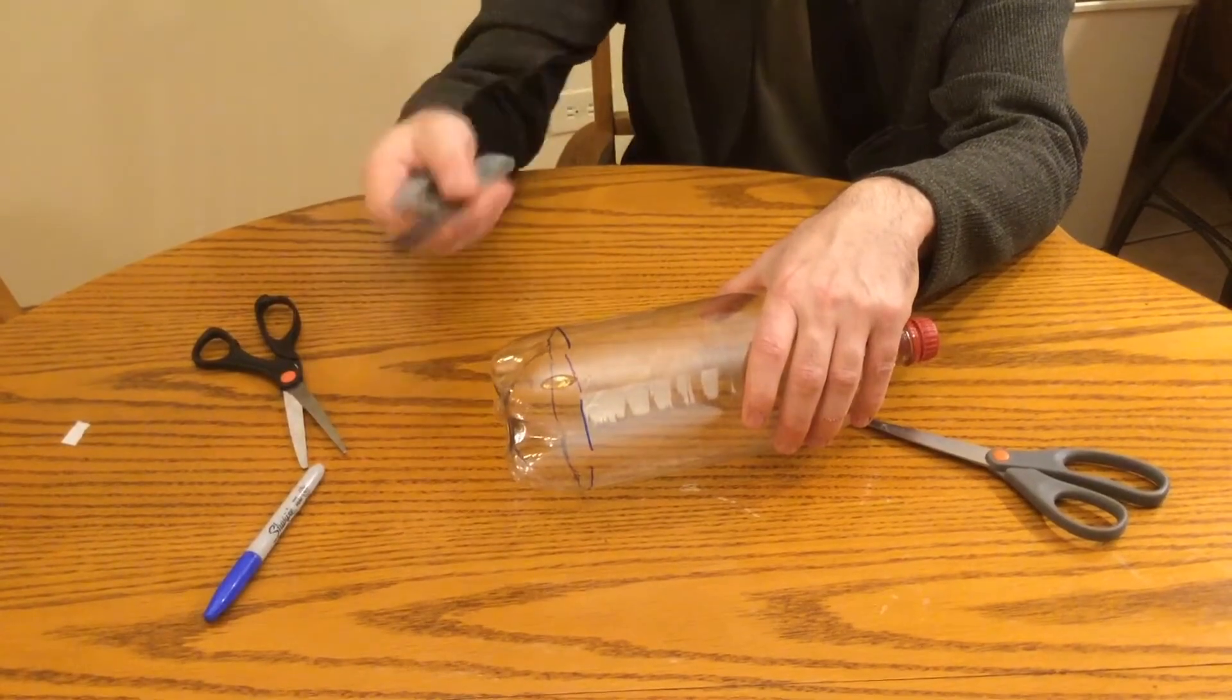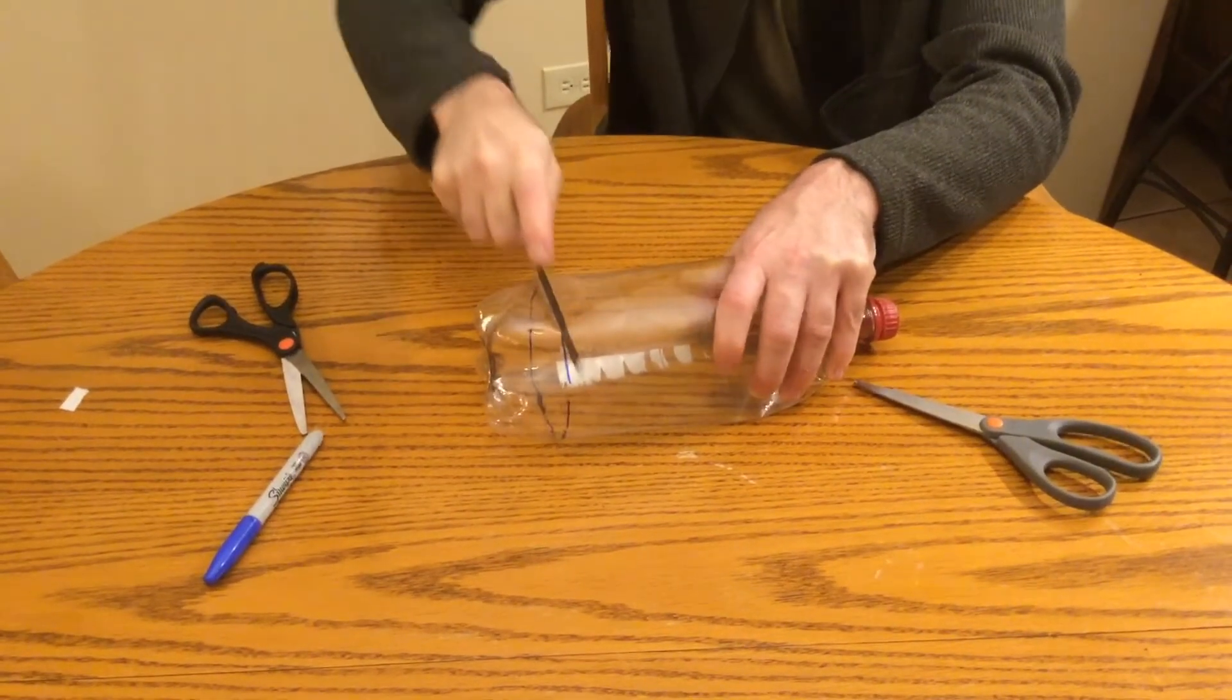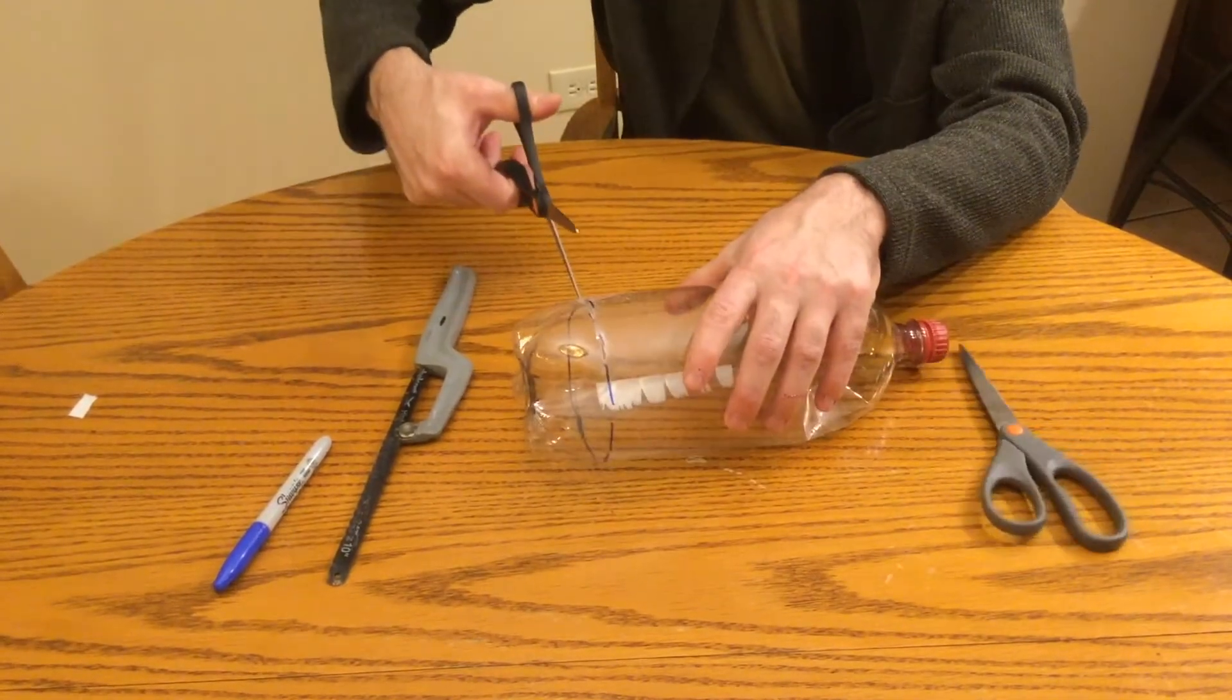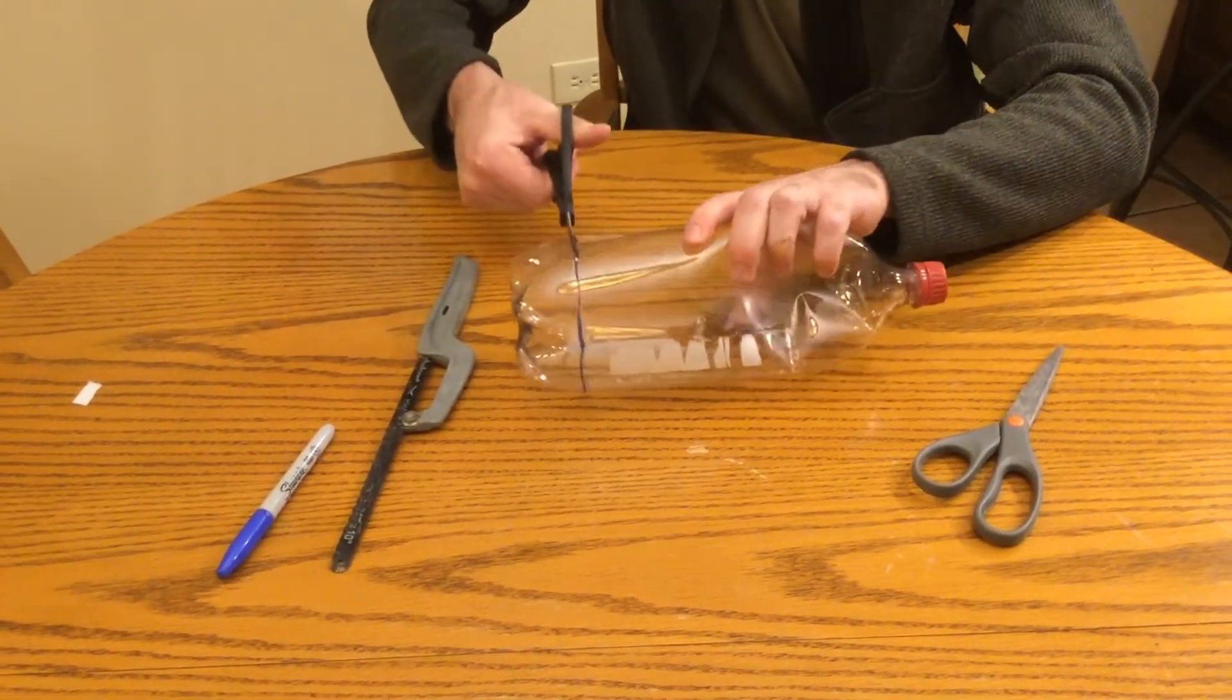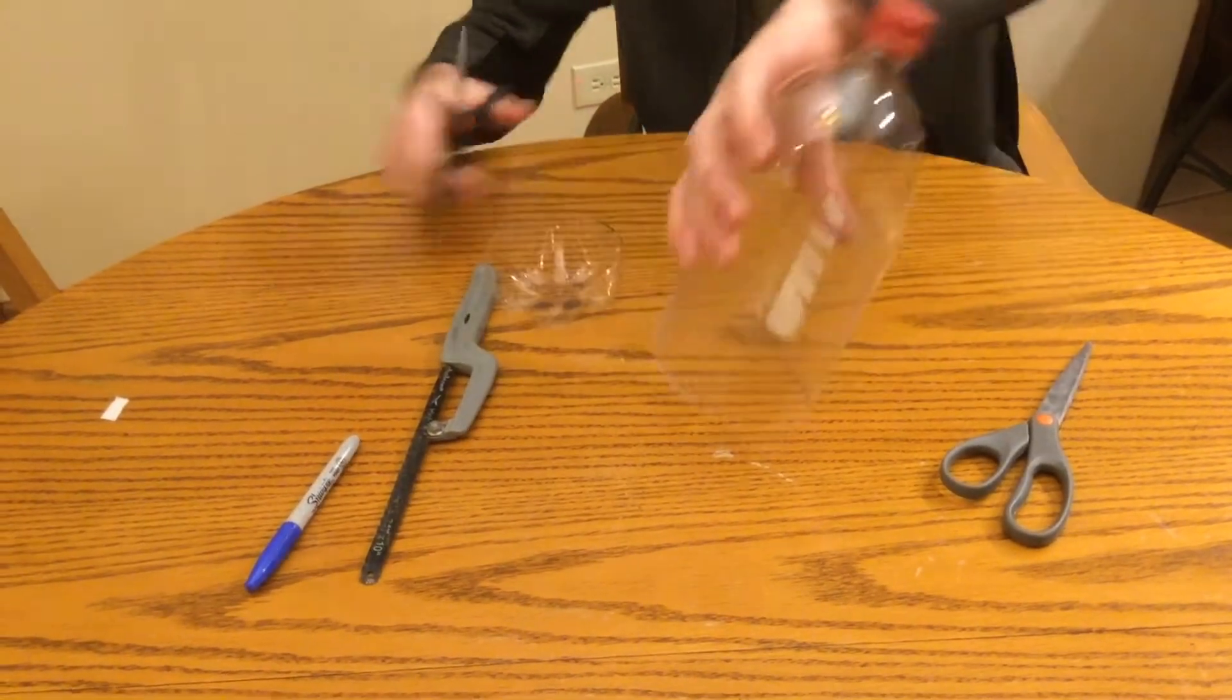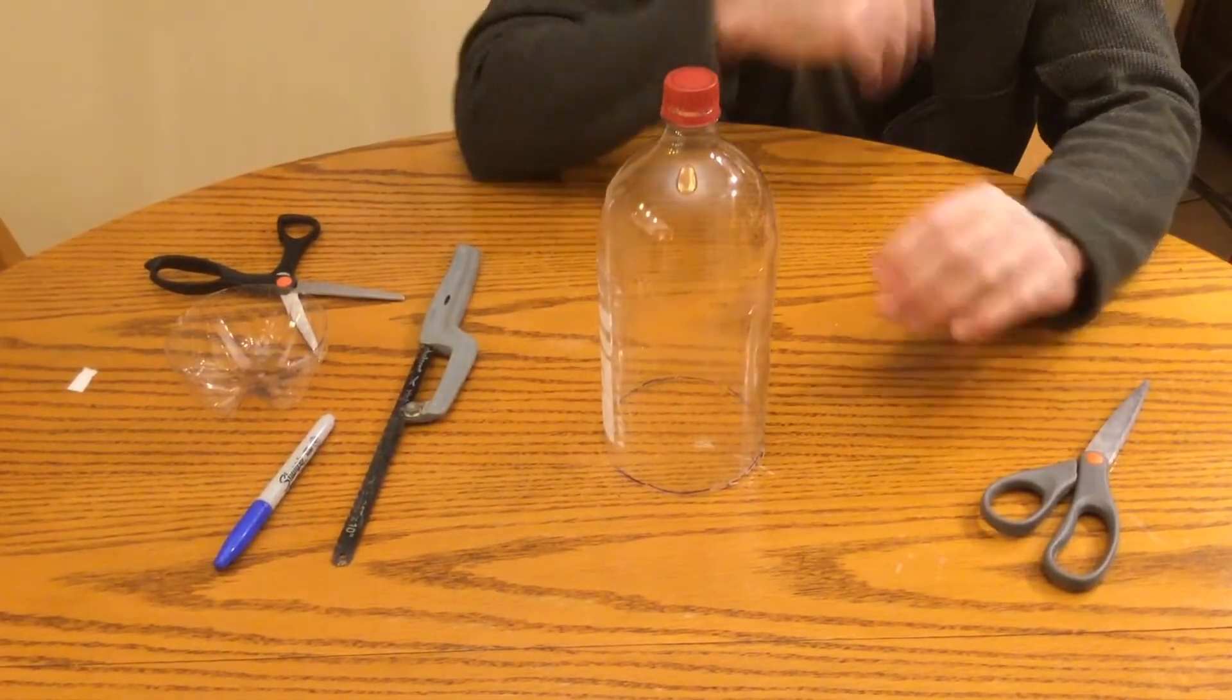So I'm going to start this. We have an opening to work the scissors into and I just follow the line with the scissors. Again, keep your hand away from the scissors when you're cutting. And now you have your lid that you're going to use for humidity experiments.